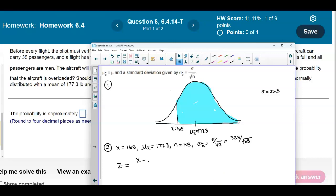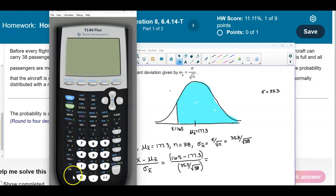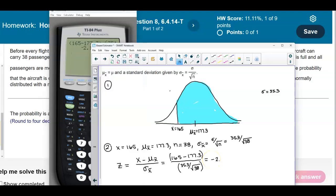Our z-score equals x minus the mean of the sample means divided by the standard deviation of the sample means. We have 165 minus 177.3, divided by 35.3 divided by the square root of 38. Let's put that in our calculator. Round that to two decimal places, and we get a z-score of negative 2.15.